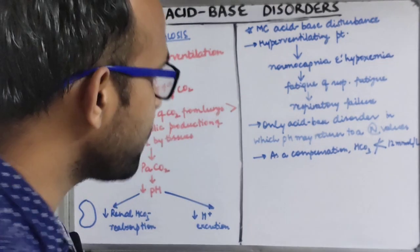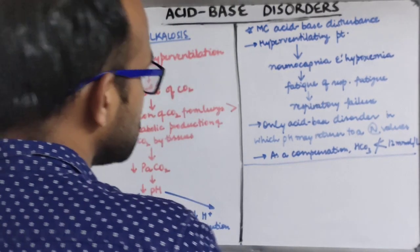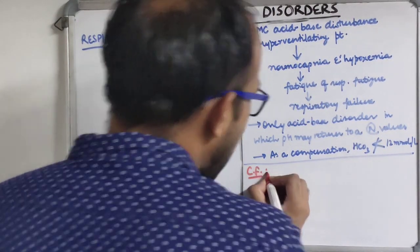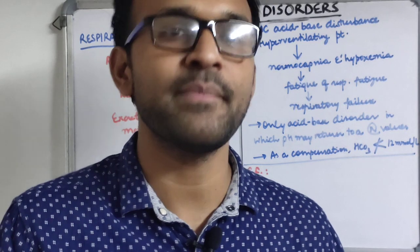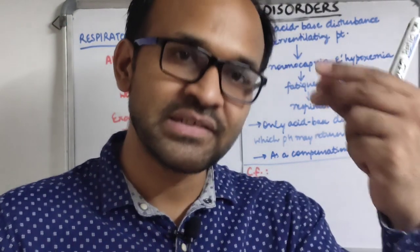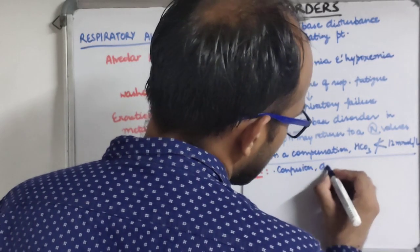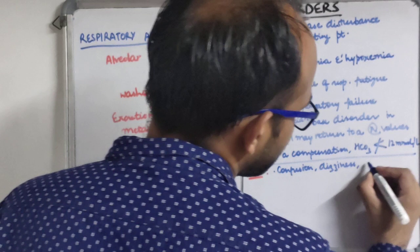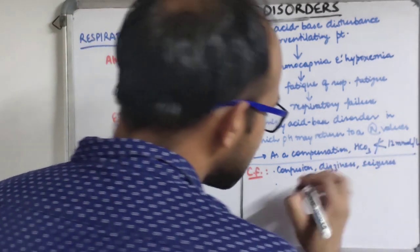Regarding clinical features of respiratory alkalosis: CO₂ is a cerebral vasodilator, so a rapid decline in PaCO₂ causes decreased cerebral blood flow. As a result, there is mental confusion, dizziness, and seizures can also occur. There is also risk of arrhythmias in patients with pre-existing heart disease.